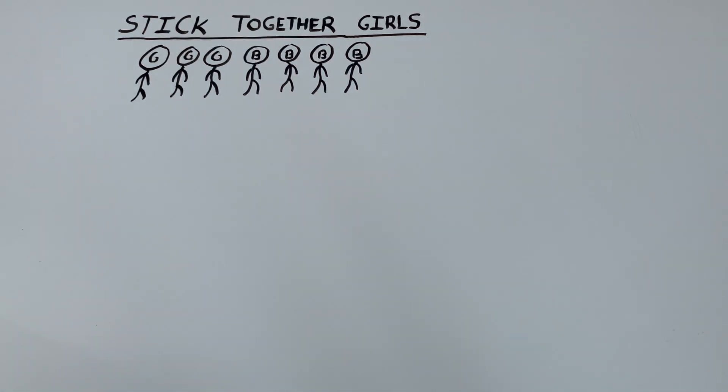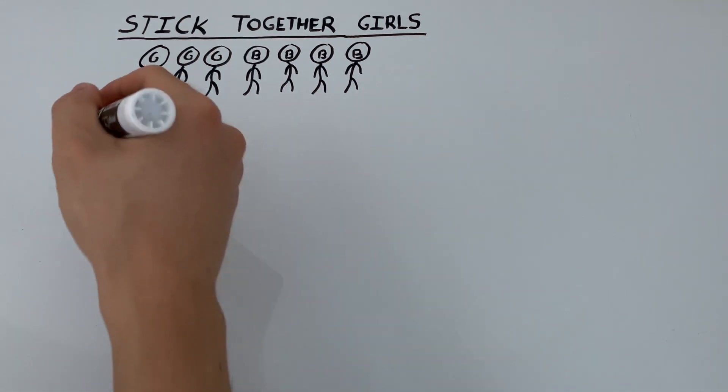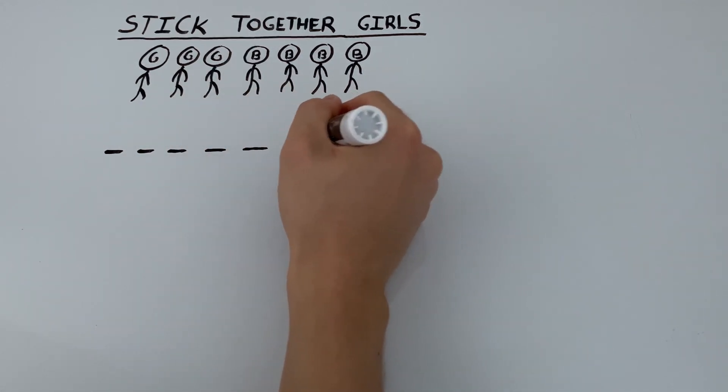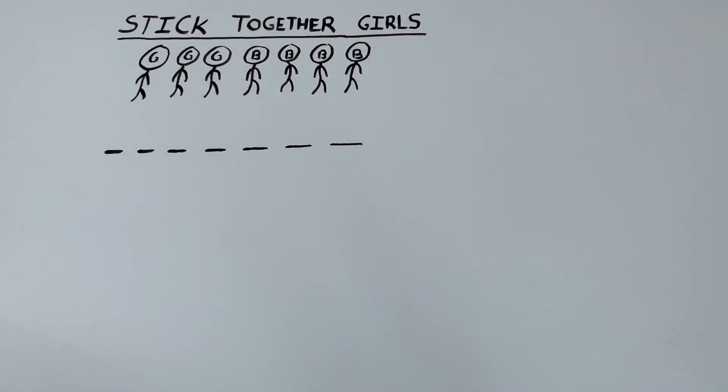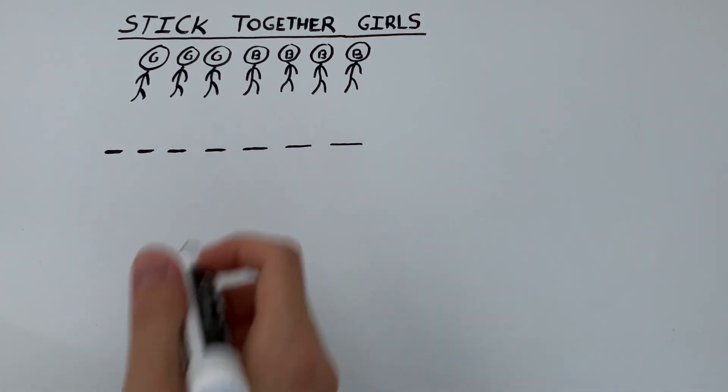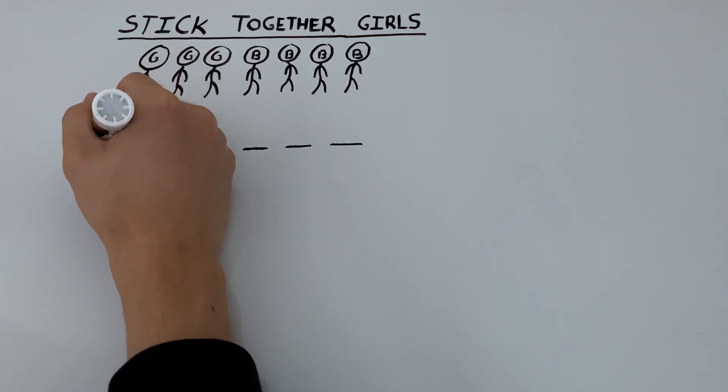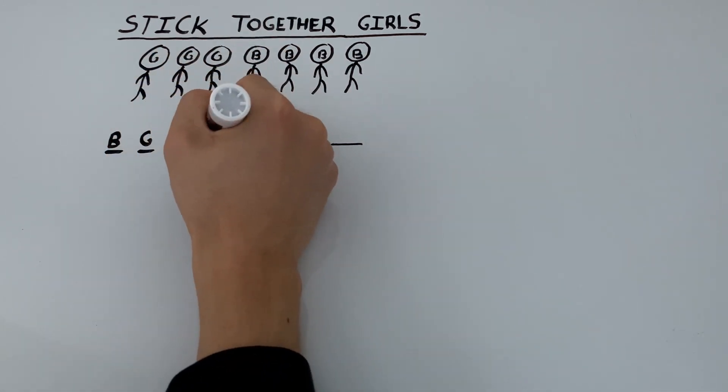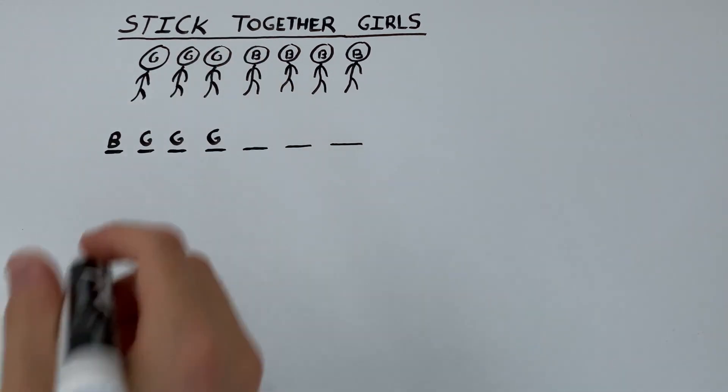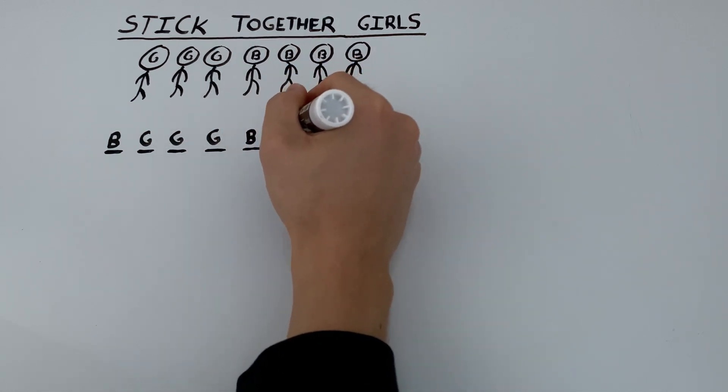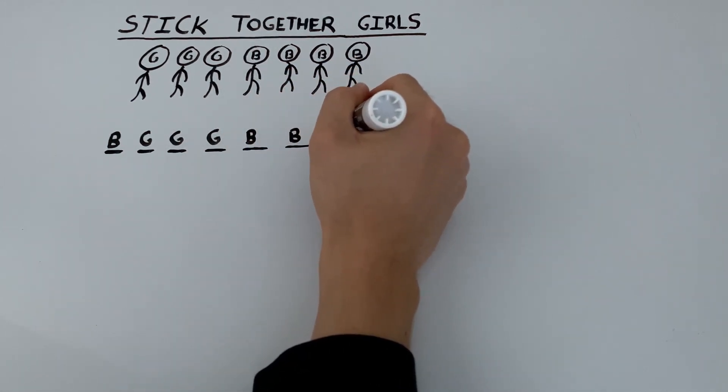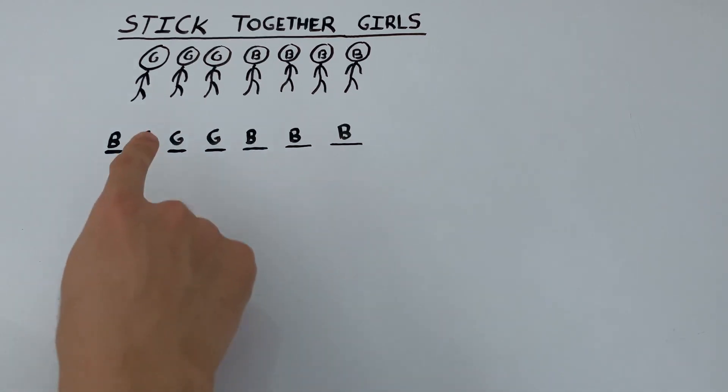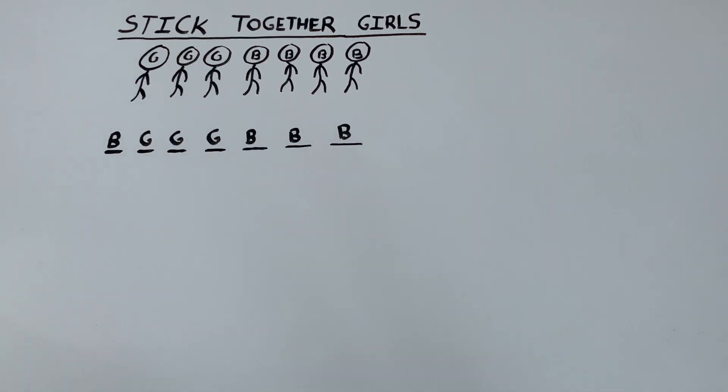So to get started, let's take a look at a possible seating arrangement. So we'll take our seven chairs and let's just fill them up. We can put a boy here, put the three girls there, and fill the remainder with boys. So this seating arrangement is perfectly fine because we've kept all three of our girls together.